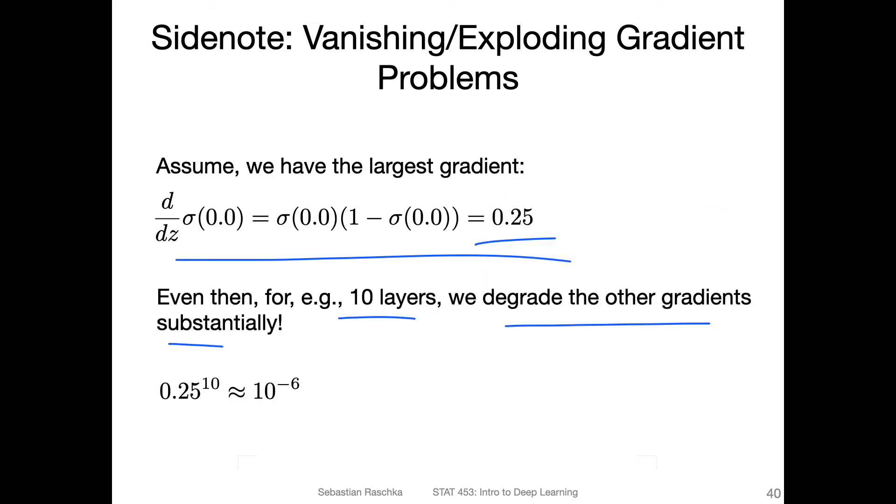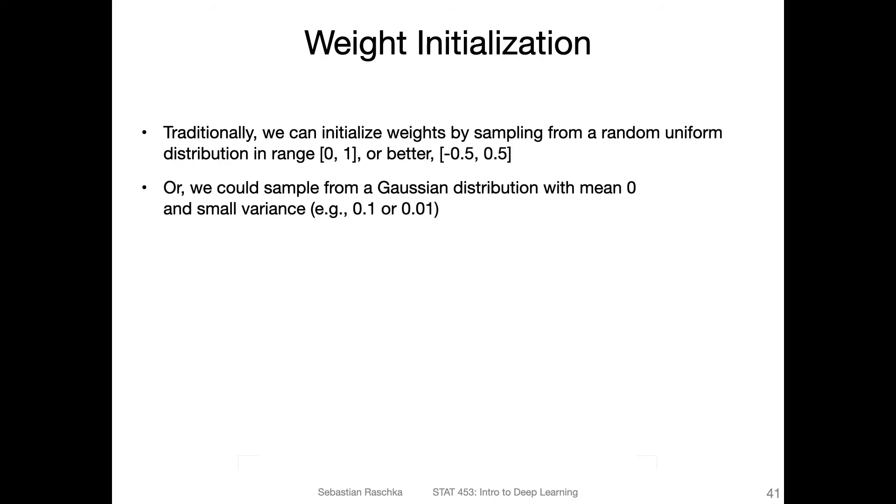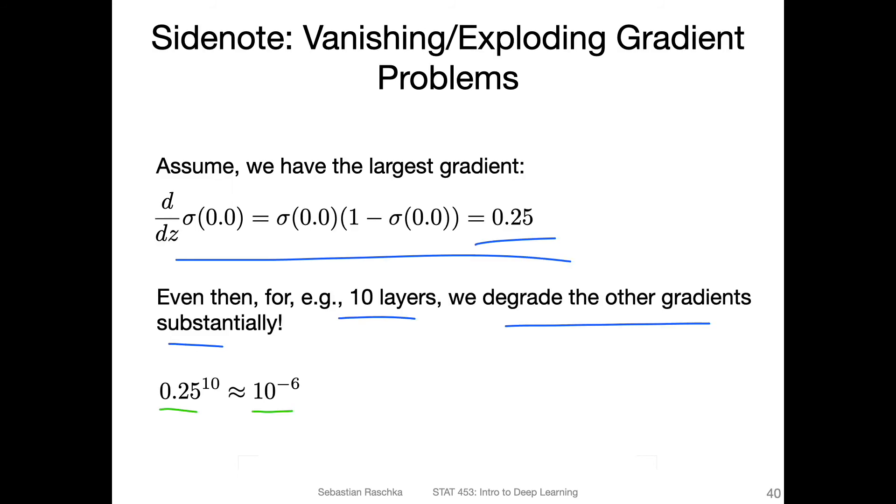In fact, if we have 10 layers, we would degrade the value by about 10 to the power of minus 6, so the gradient will be so small that the network will probably not learn much anymore. Because of that, it's usually a good idea to use other types of activation functions. This is one of the motivations why it's important to initialize the weights centered at zero, for example, if you use a logistic sigmoid function, because then you will have at least a maximum gradient.